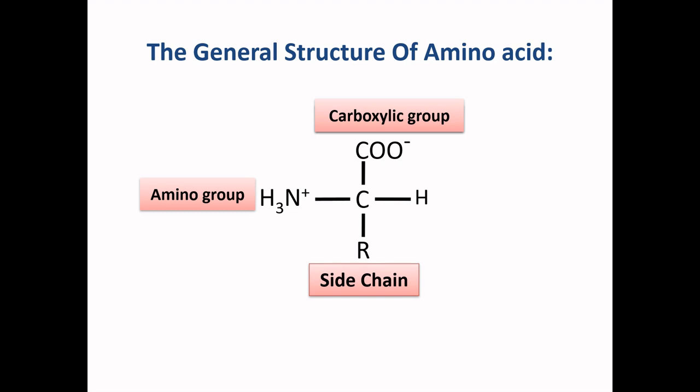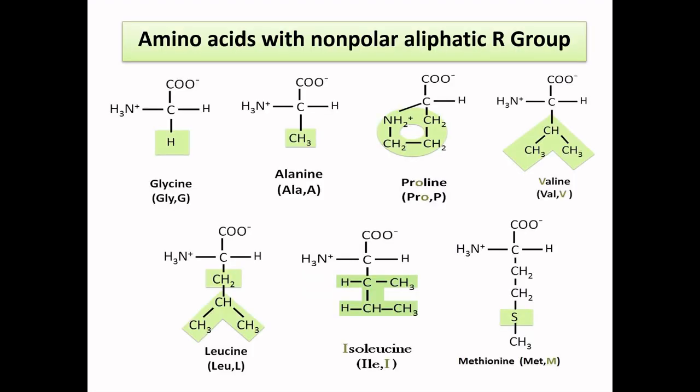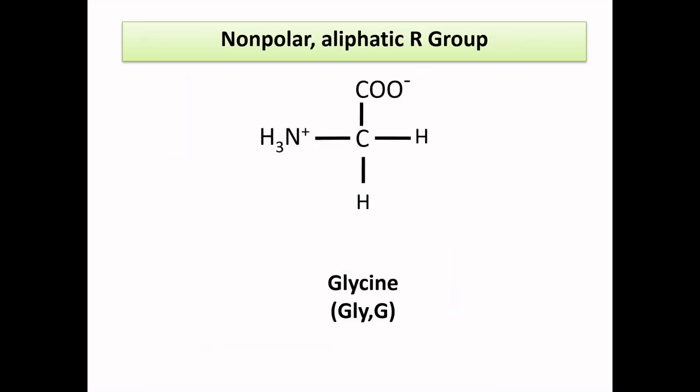Now let's move to our first group — amino acids having non-polar aliphatic R group. It contains seven amino acids: glycine, alanine, proline, valine, leucine, isoleucine, and methionine. All these amino acids' single-letter names are similar to their name's first letter.